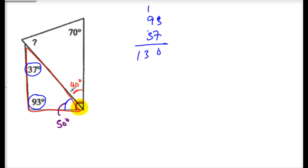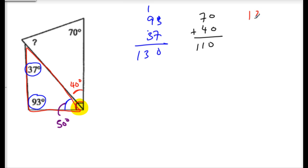I have two of the three angles in my second triangle. To find the third angle, you add 70 and 40 to get 110, then subtract from 180, and I get a missing angle of 70 degrees.